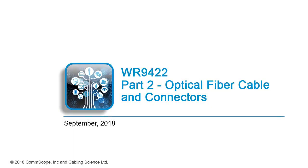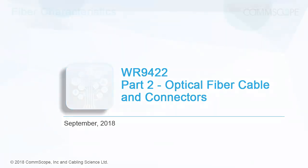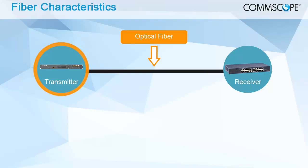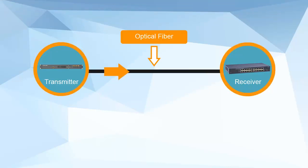Welcome to part 2 where we look at fiber characterization and transmission issues. Light transmission in optical fiber uses three basic elements: a transmitter, a receiver, and a transmission medium that passes the signal from one to the other.